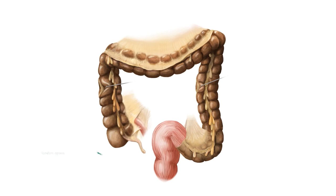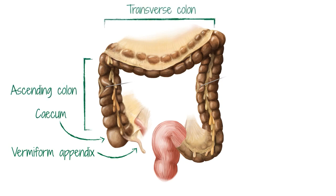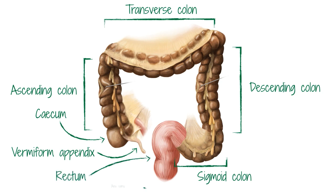The large intestine consists of the vermiform appendix, the cecum and the colon, which consists of the ascending colon, the transverse colon, the descending colon and the sigmoid colon. Distal to the colon are the final parts of the large intestine, the rectum and the anal canal.